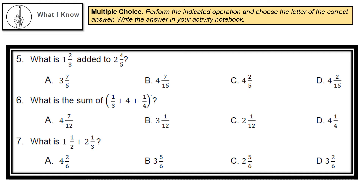Number 5: What is 1 and 2/3 added to 2 and 4/5? A. 3 7/5, B. 4 7/15, C. 4 2/5, or D. 4 2/15.